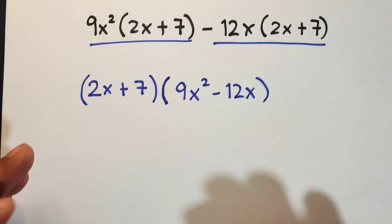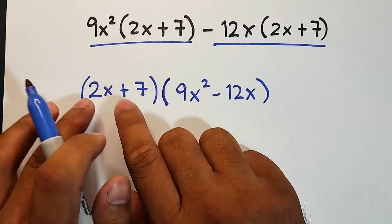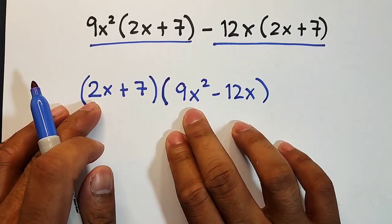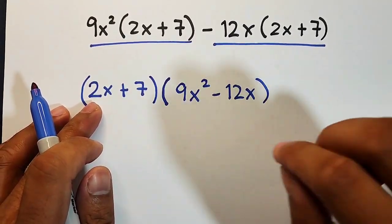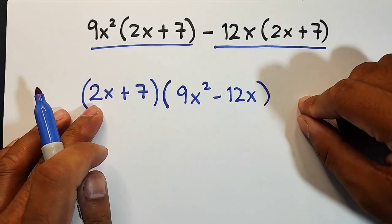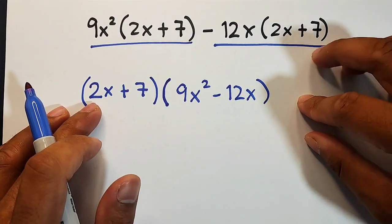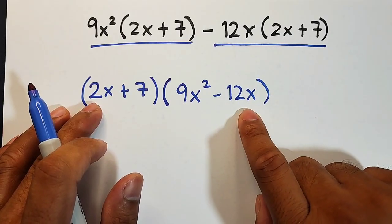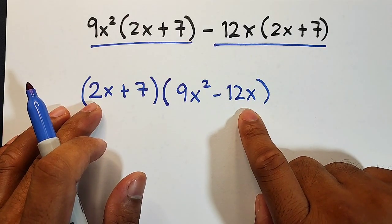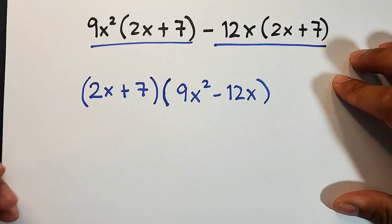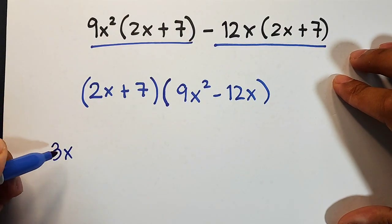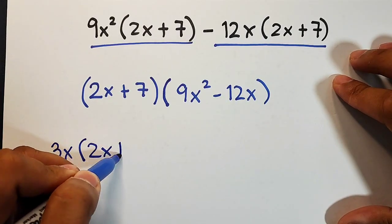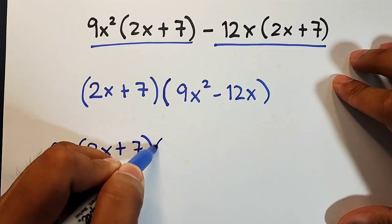But guys, this isn't factored out completely. 2x + 7 is okay. But this is still the problem: 9x² - 12x. We can factor out the GCF, which is 3x. Both have x, and 9 and -12 are both divisible by 3.